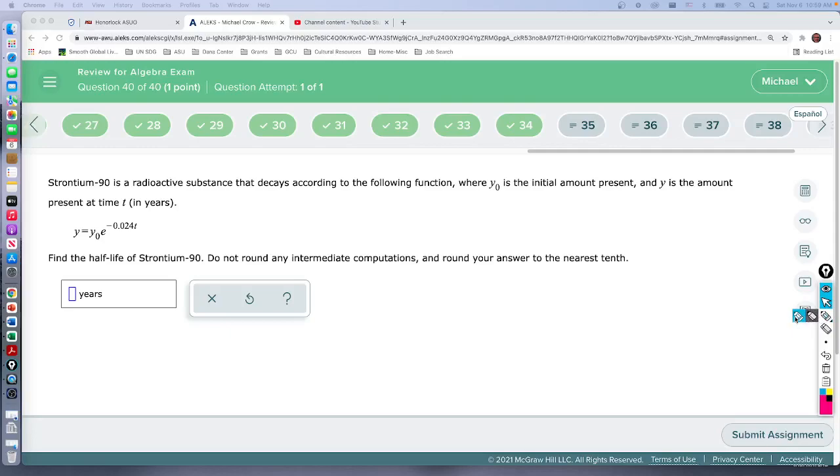Question 40, we've made it all the way to the end. The cool part is they give us an equation down here, that's what I'm going to start with. We want to find a half-life - so the half-life is how long before half of it is left. Do not round during intermediate computations, but at the end round to the tenth.